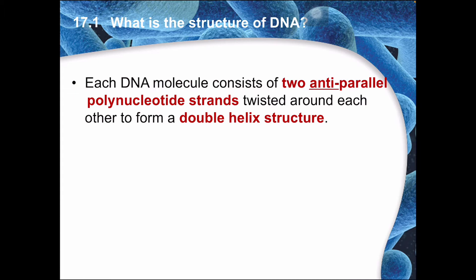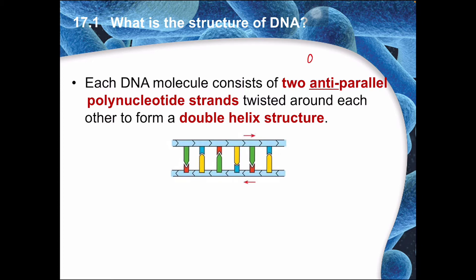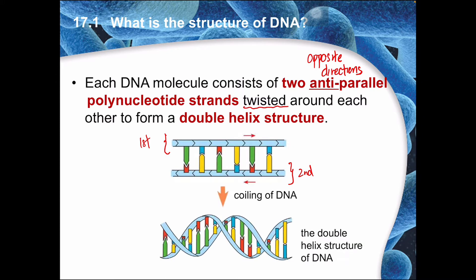In terms of structure, every DNA molecule is made out of two strands — like two chains — and these are what we call polynucleotide strands. These two strands are what we call anti-parallel strands. Anti-parallel means they are actually running in opposite directions. So there are two strings of structure: the first strand and the second strand running in opposite directions — one goes from left to right, the other from right to left. Together they further twist around each other to form what we call a double helix structure.